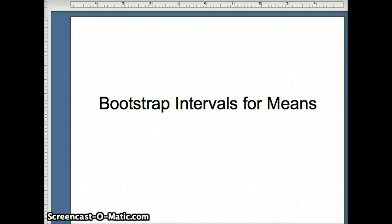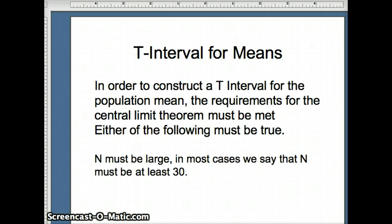This presentation examines a bootstrapping interval for means. Recall, in order to construct a t-interval for the population mean, the requirements for the central limit theorem must be met. So either n must be large, that is, we're going to say that n has to be at least 30, or we have to conclude that if n is small, the underlying dataset must be normal.